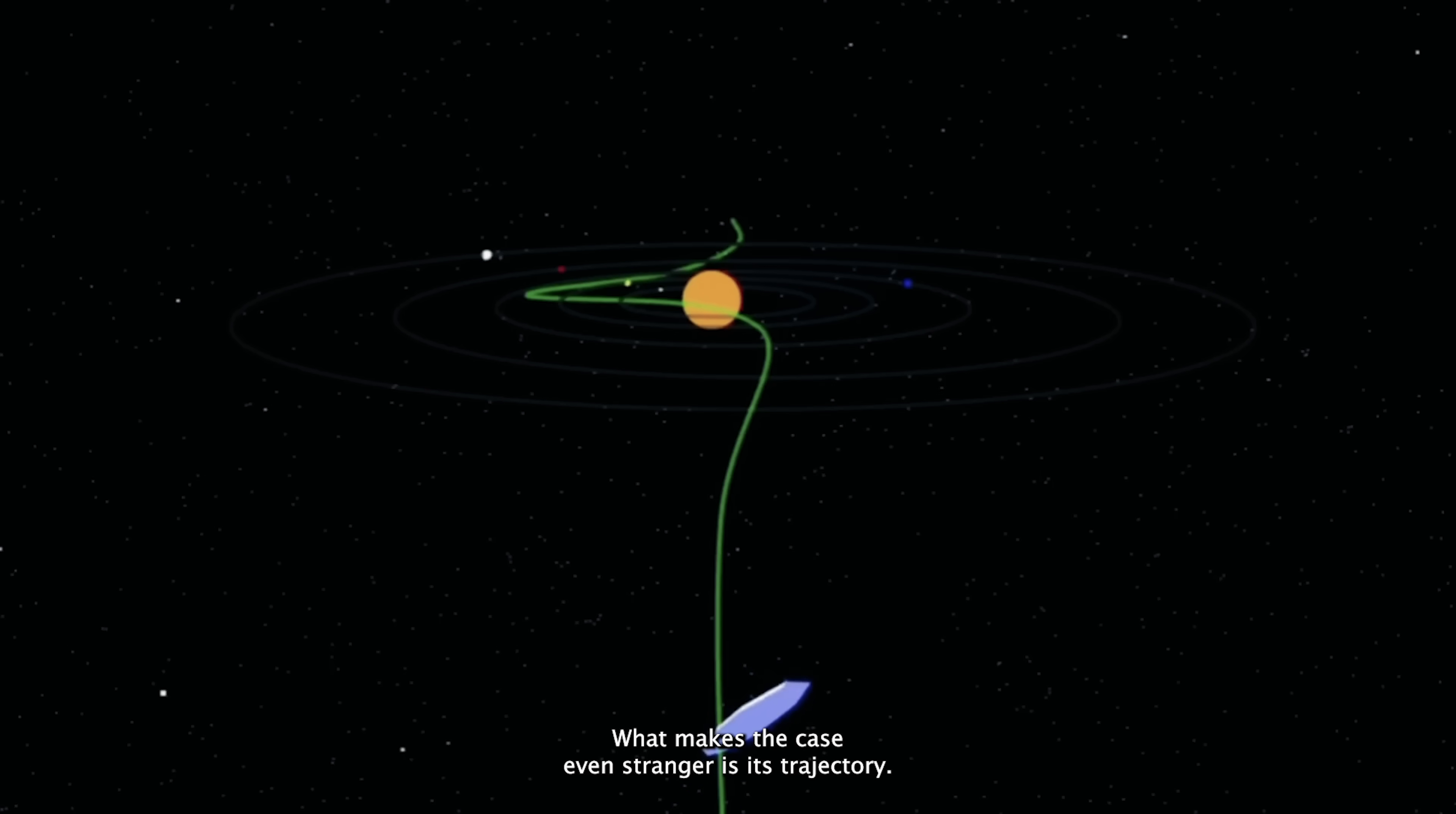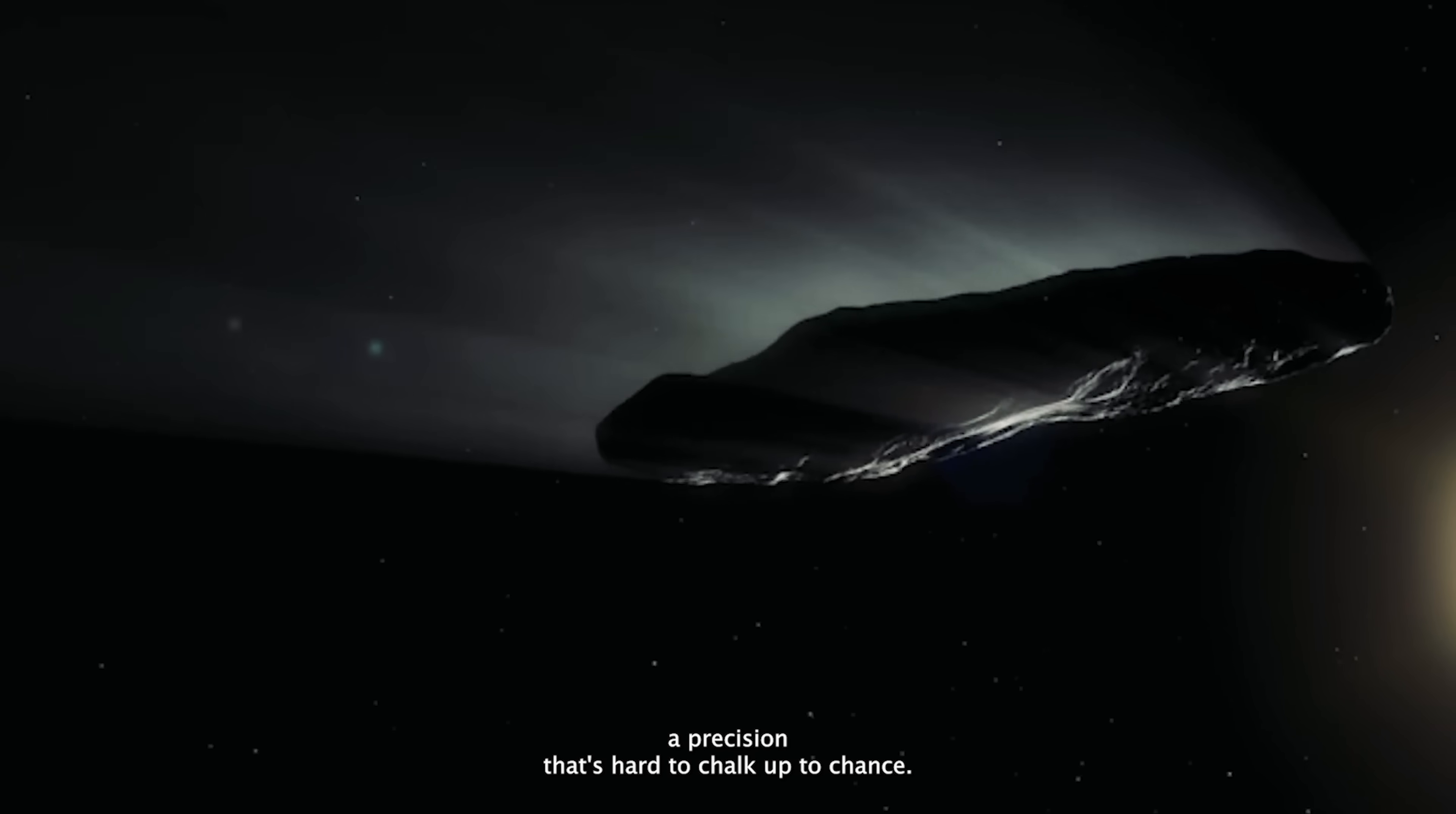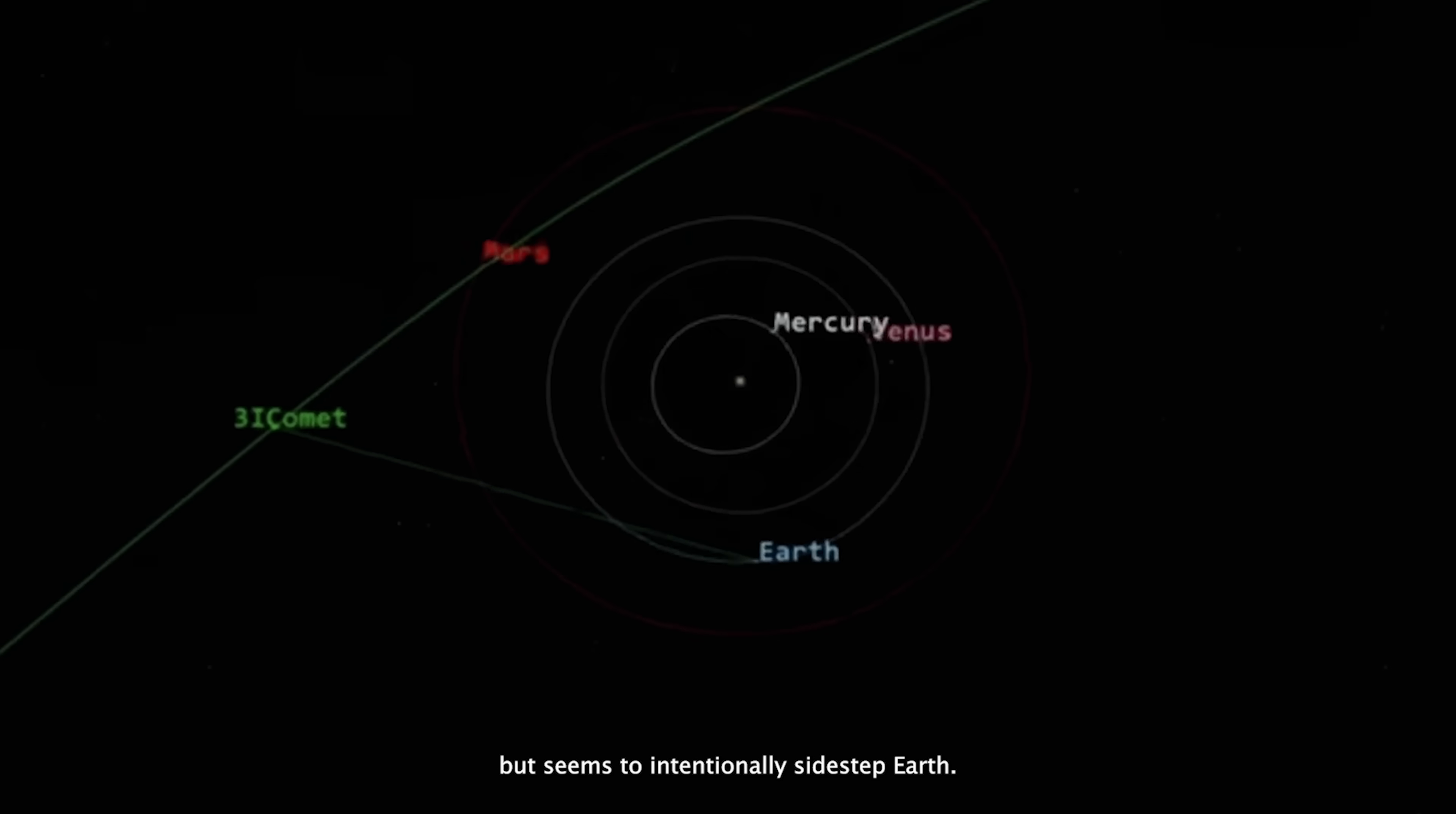What makes the case even stranger is its trajectory. Instead of following a random slant like most interstellar objects, 3i Atlas is moving almost perfectly parallel to the plane of the solar system, a precision that's hard to chalk up to chance. Even more curious, it skims past several nearby planets, but seems to intentionally sidestep Earth.